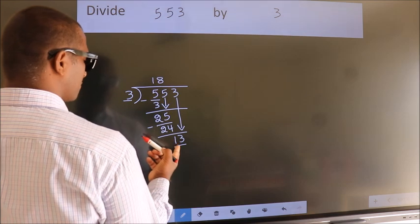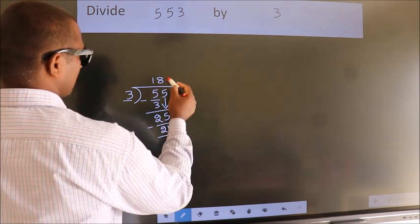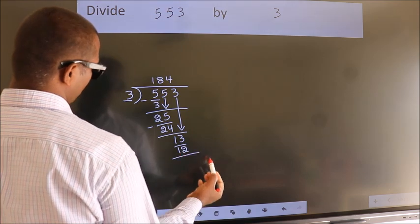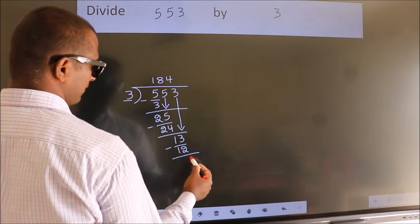A number close to 13 in the 3 table is 12: 3 times 4 is 12. Now we subtract and get 1.